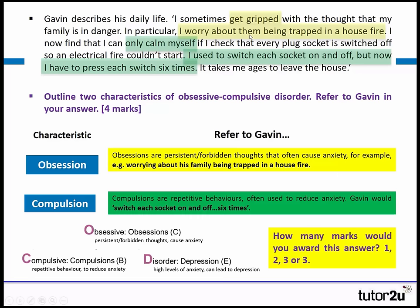In the extract, the fact that he says he gets gripped links to his obsessions, and the fact that this is the only thing that can calm him through the compulsions is what's helping him reduce anxiety. We need to include that key information. This is not a great answer — it certainly wouldn't get us into the top mark band.